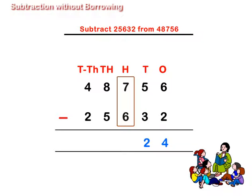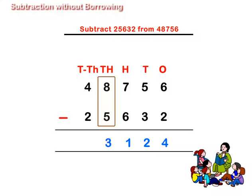Similarly, at hundreds place, we get 7 minus 6 is equal to 1. At thousands place, we get 8 minus 5 is equal to 3.